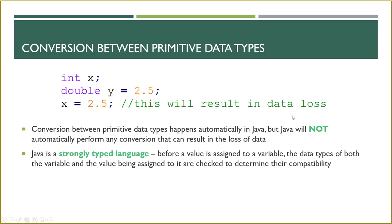The first thing we'll talk about is converting between primitive data types. Conversion between primitives can automatically happen in Java, but Java will not perform any conversion automatically that may result in the loss of data. For example, if X is declared as an integer and Y is a double assigned 2.5, assigning 2.5 to X would result in data loss — a double literal being shoved inside of an integer would have to cut some of that double off.